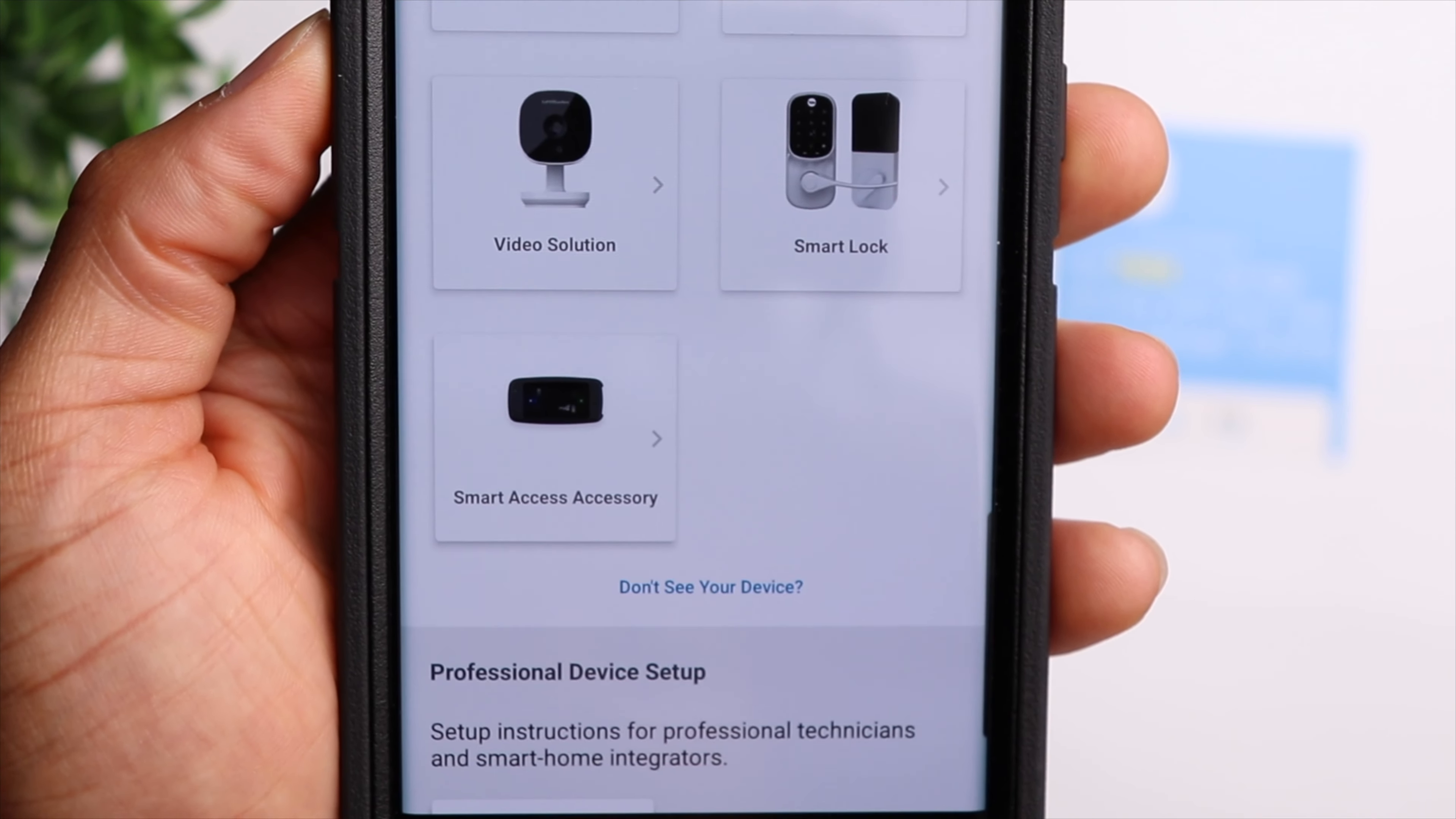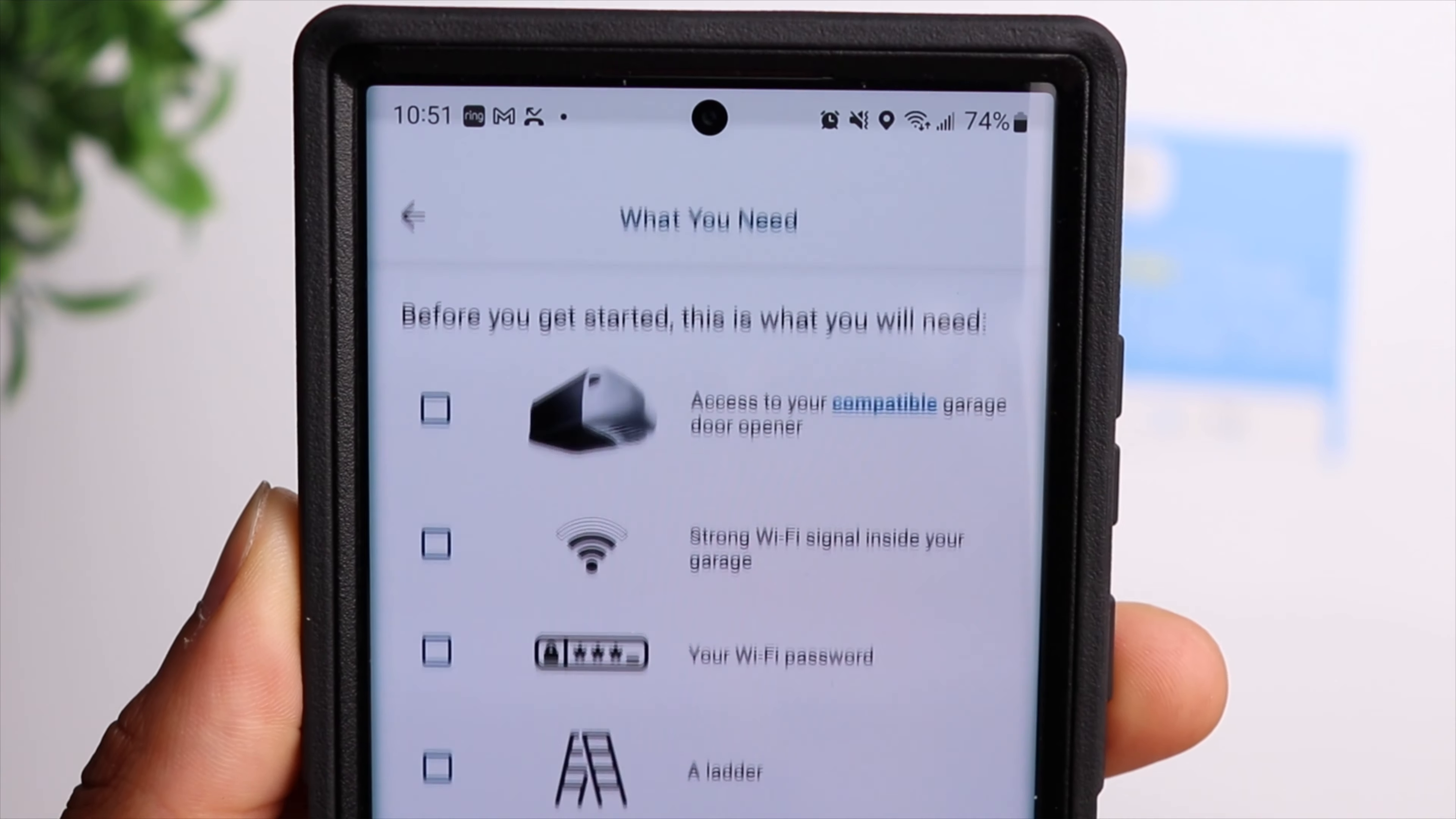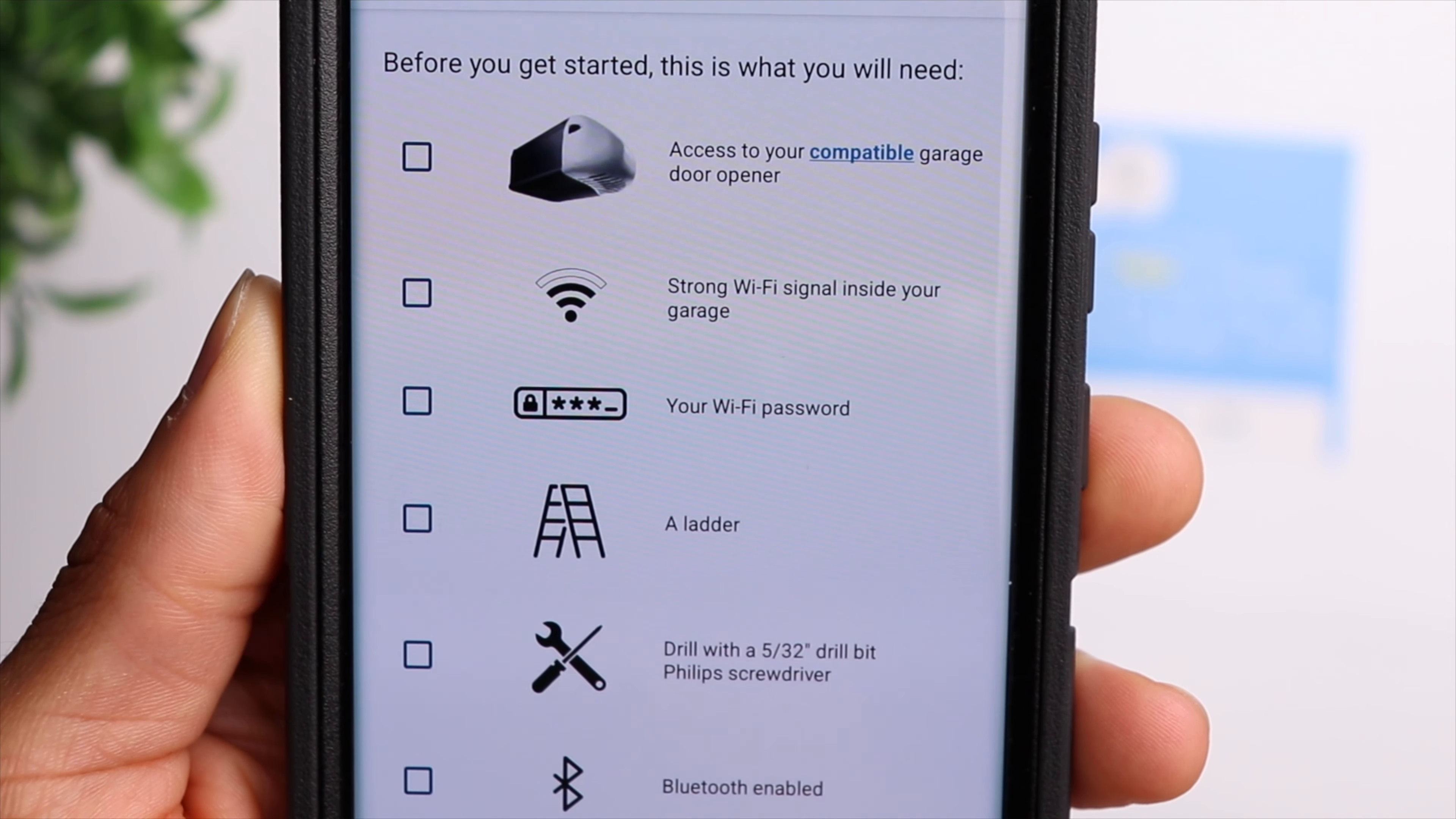So we're going to be setting up the MyQ smart garage hub and the smart garage control. From there, it's going to take you to a list of items that you want to make sure you have access to so that you can complete the setup process.